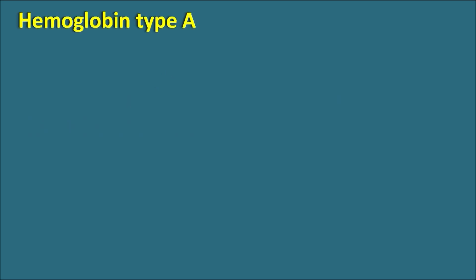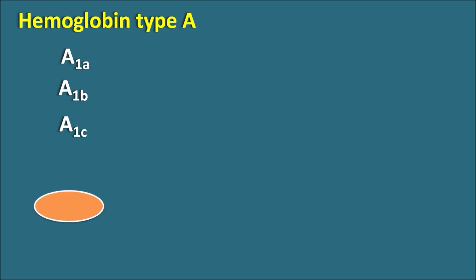What is hemoglobin type A? Hemoglobin is present in different types. Among these, type A has subclasses like A1a, A1b, and A1c. Among these, A1c is used for estimation of the glucose levels in the plasma.